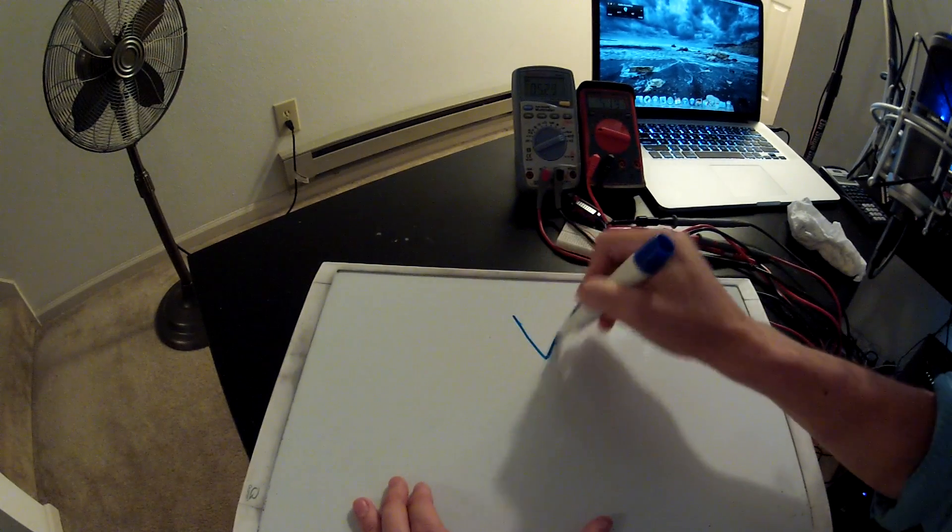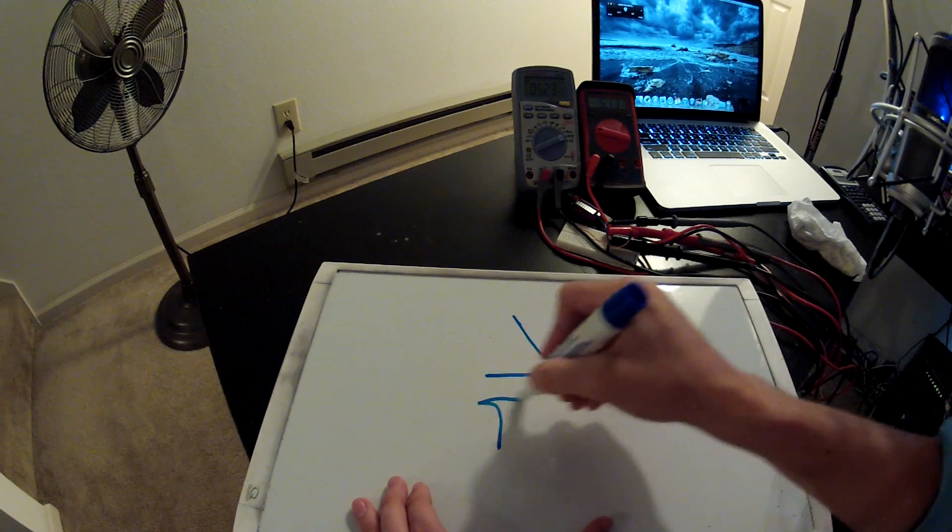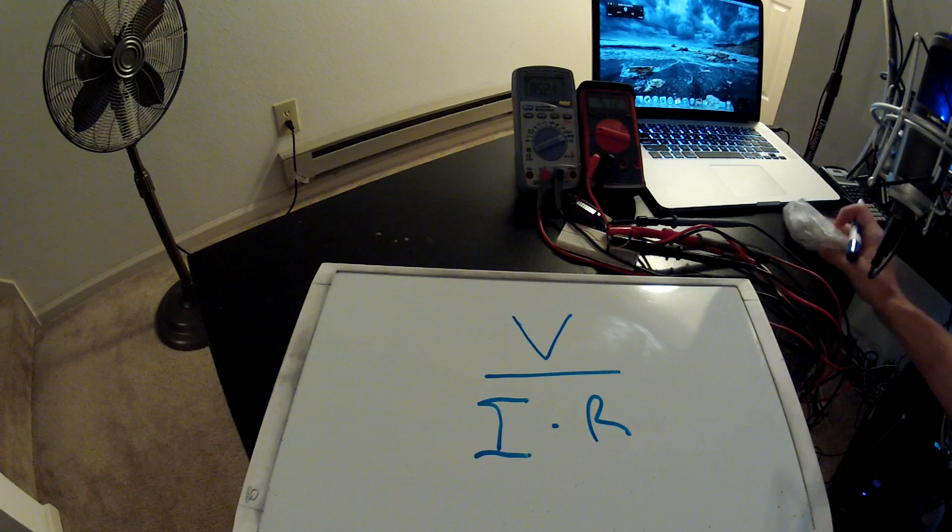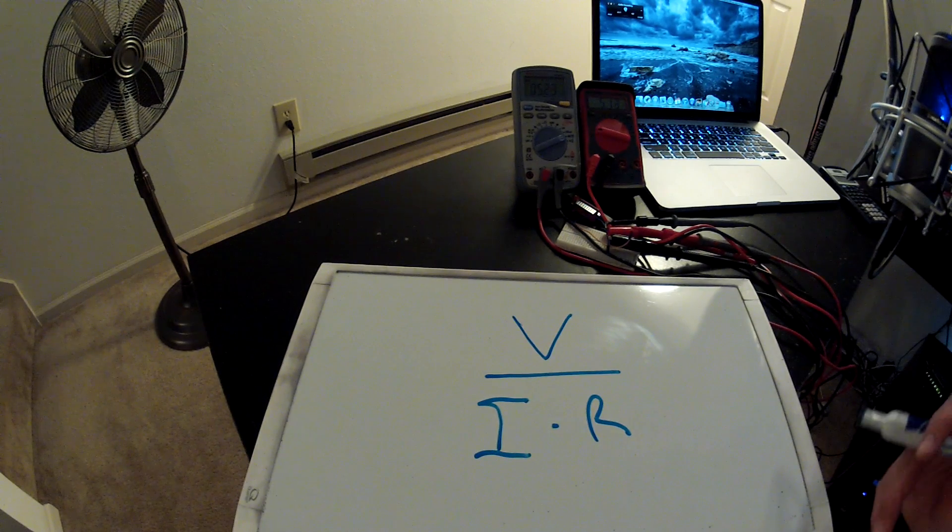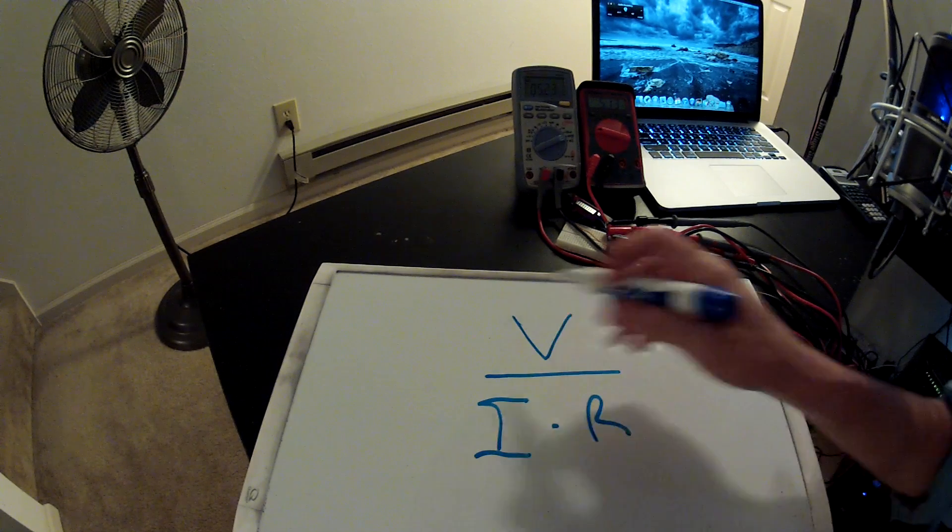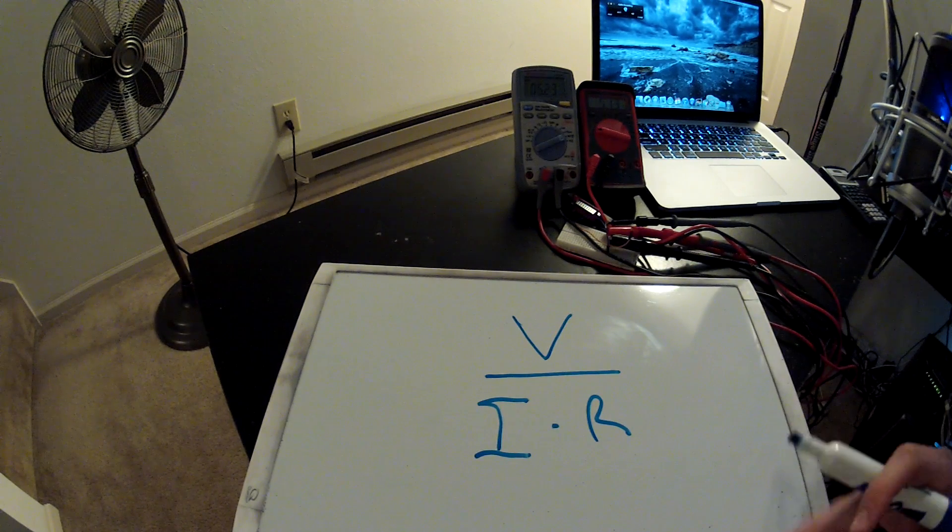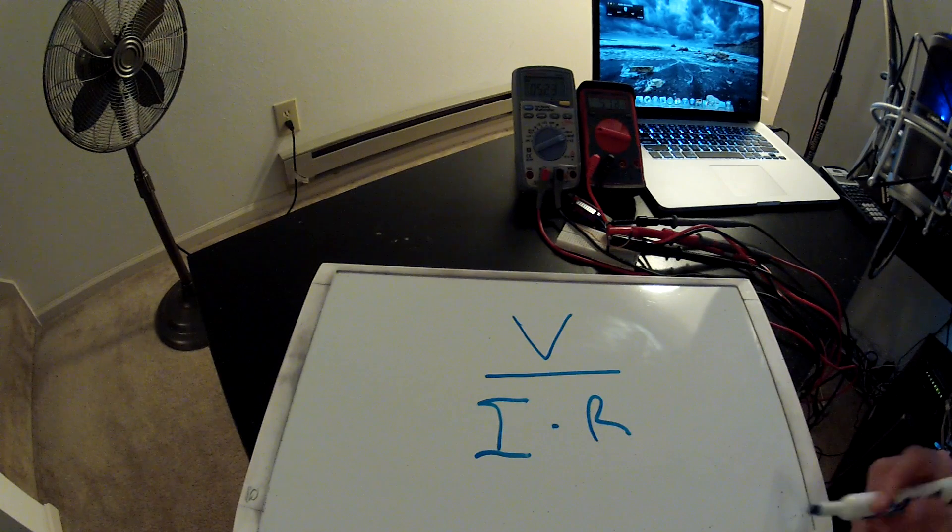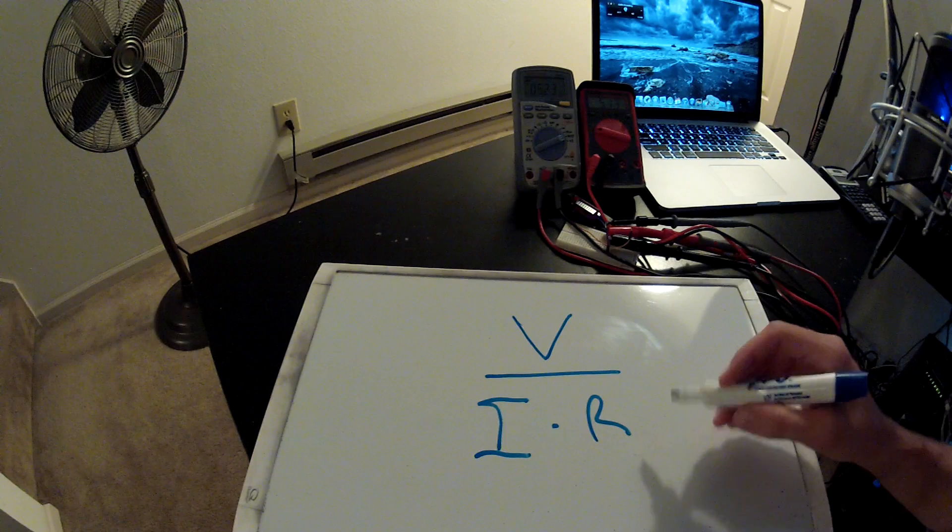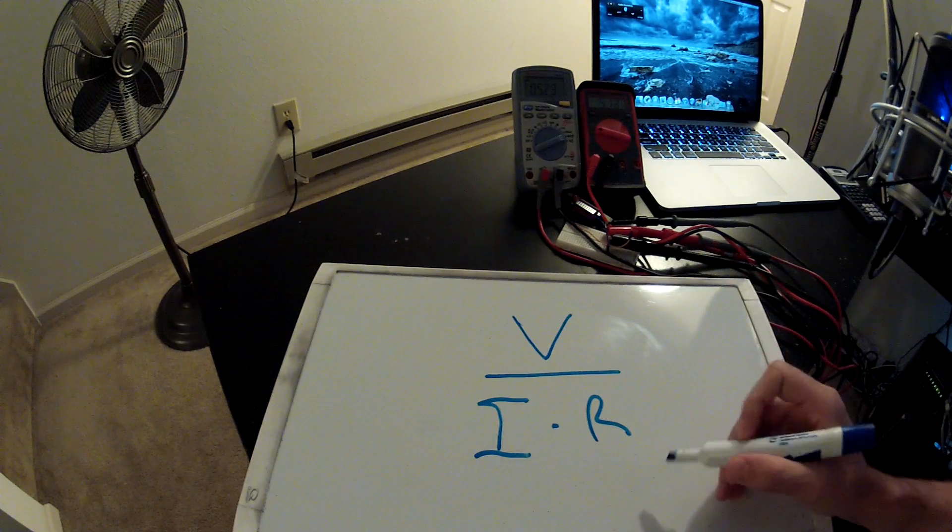is to write it like this: V over I*R, like a triangle. It's an equation that has three variables in it. In order to find any of those variables or solve for any of those, you need to have two of them already. So let's say you had V and you had I and you